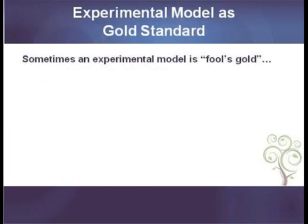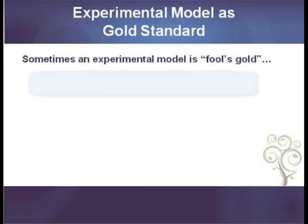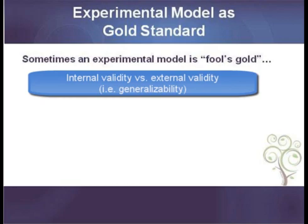The issue of experimental design as the quote-unquote gold standard is probably one of the most controversial and acrimonious discussions in the evaluation community. For every person who says experimental design is the gold standard, there's someone else who will retort: yes, but sometimes it's fool's gold. Why would someone not endorse these obviously beneficial four requirements? The first reason is what we call the tradeoff between internal validity and external validity. When you want to prove with certainty that your intervention caused the result and not something else, experimental design is really key because it isolates your cause from any other cause.